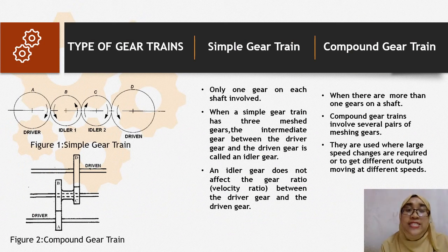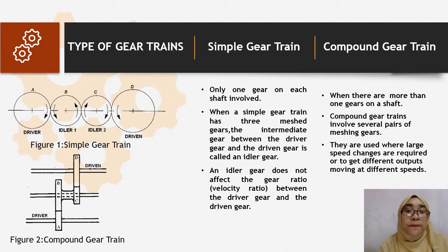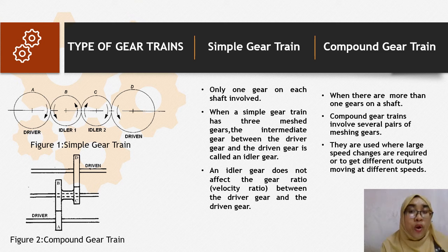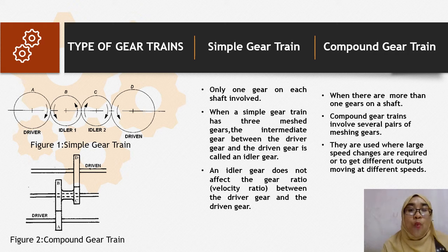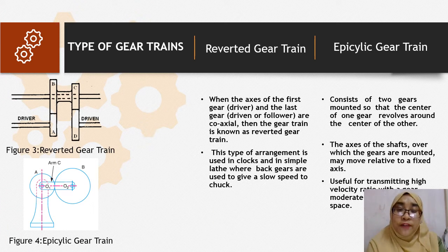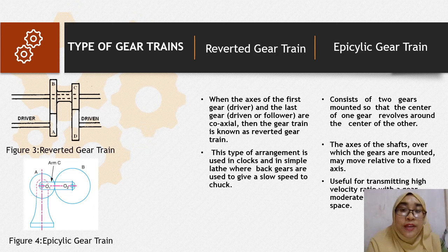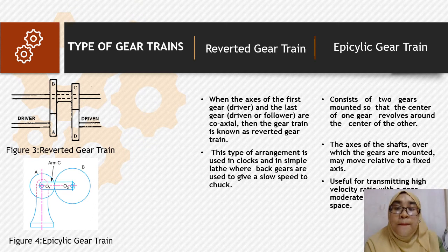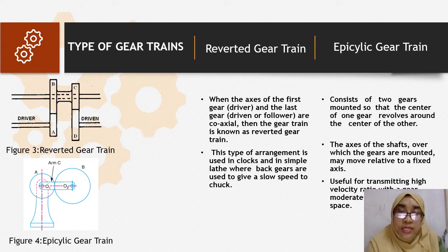Here are the types of gear trains. First, simple gear trains that only have one gear on each shaft, while compound gear trains have more than one gear on a shaft. When the axes of the driver and driven are coaxial, the gear train is known as reverted gear train. The last one is epicyclic gear train, where two gears are mounted so the center of one gear revolves around the center of the other.